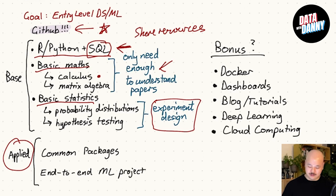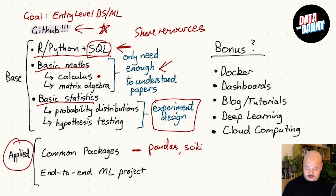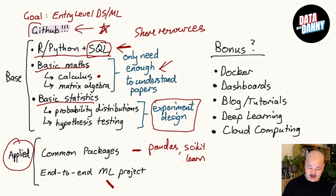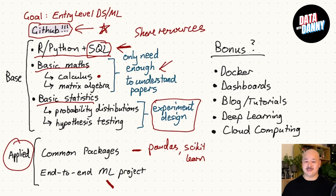The best way to do that is to show your knowledge of common packages in the languages you've learned. In Python, you might want to know pandas, and for machine learning maybe scikit-learn, and perhaps some deep learning as well. The most important thing is probably an end-to-end machine learning project. If you really want to stand out, integrate it with your GitHub for bonus points, but this end-to-end project will show hiring managers that you understand where different components of the data science process fit in. That knowledge is more important than being able to dive into a specific algorithm.